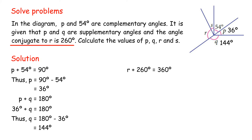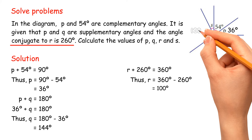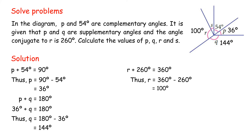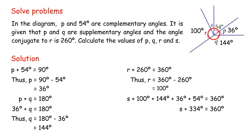r plus 260 degrees equals 360 degrees, so r equals 100 degrees. s plus 334 degrees equals 360 degrees; s equals 360 degrees minus 334 degrees equals 26 degrees.